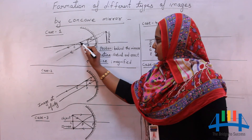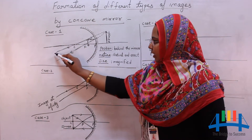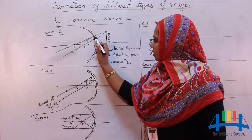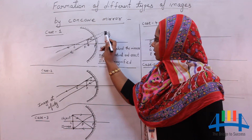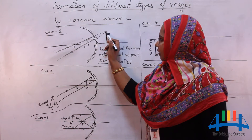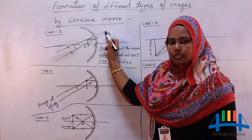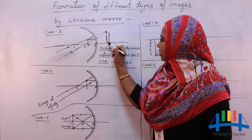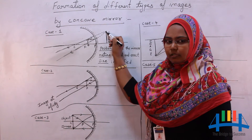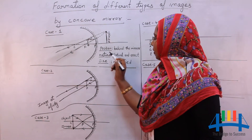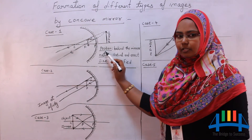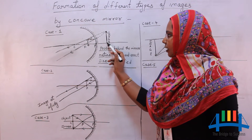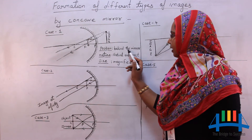The two reflected rays are not meeting anywhere here. But when we extend these reflected rays backwards, you can see I am extending these rays backwards. The two reflected rays, after extending backwards, meet at a point. So this is the point where the image is formed. The image is formed above the principal axis.